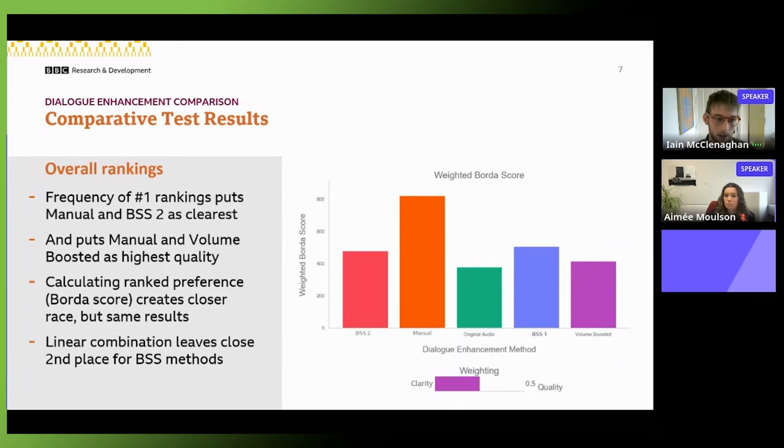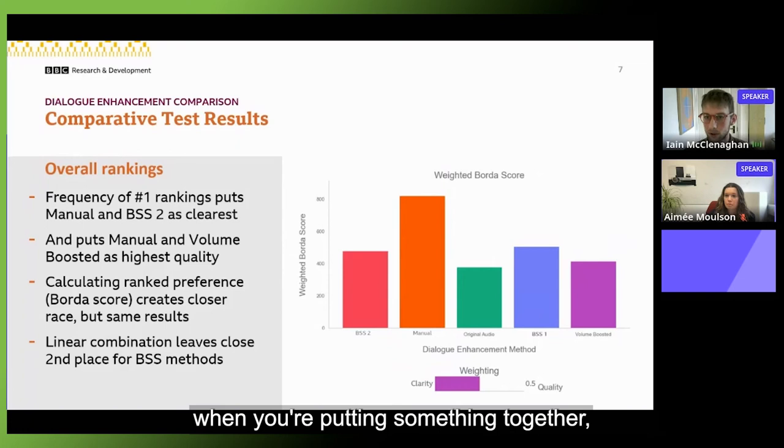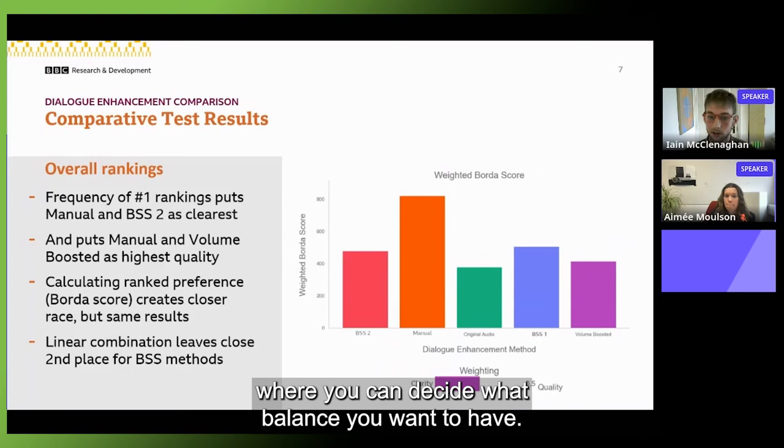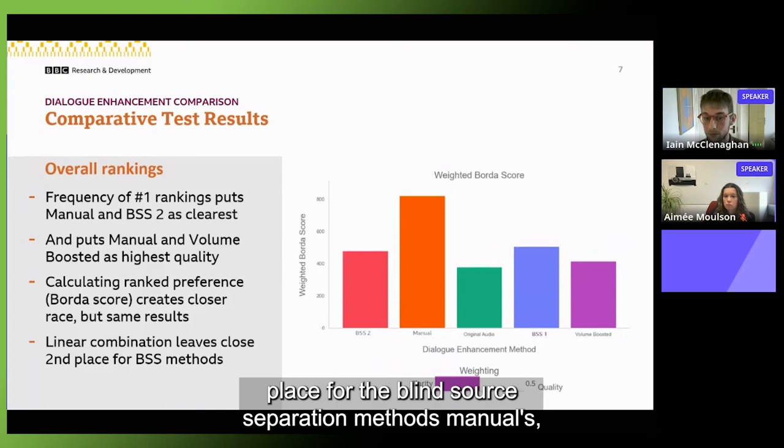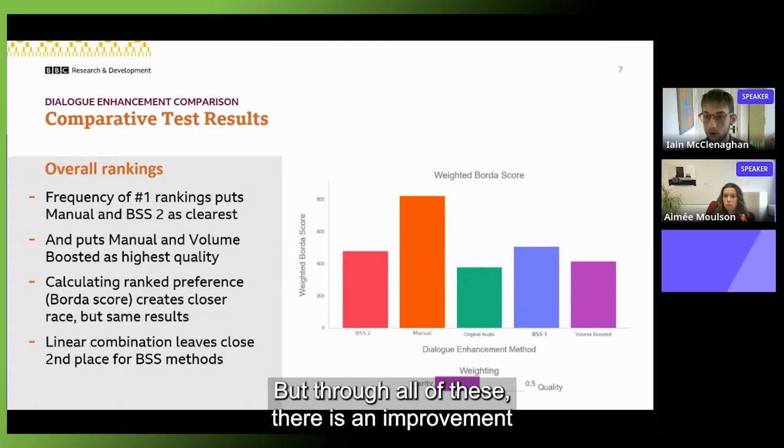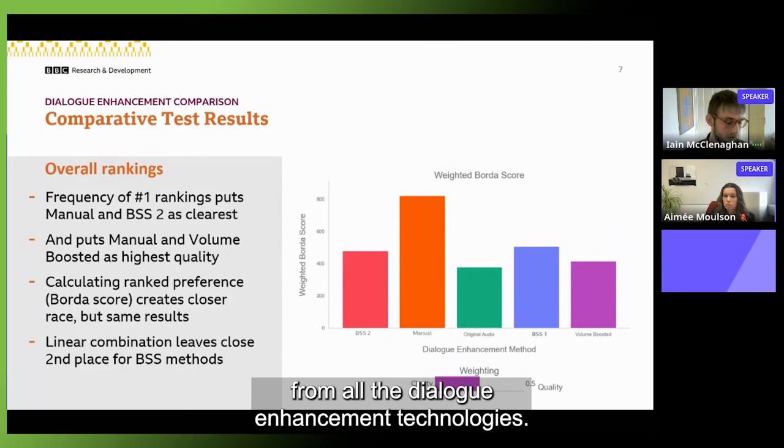But what actually happened was the same results came out with less in it, but the results were the same for clarity and for quality. So then you can't separate quality and clarity when you're putting something together, they're both present and you have to decide on a trade-off between the two. So I made this kind of linear combination interactive graph where you can decide what balance you want to have. This is a screenshot of an equal weighting between clarity and quality and you can see that it's a pretty close tie for second place for the blind source separation methods. Manual's again in first place, but throughout all of these there is an improvement from all the dialogue enhancement technologies.